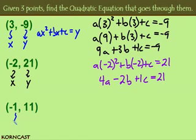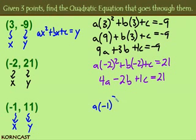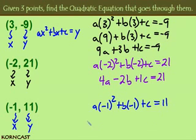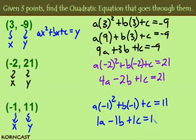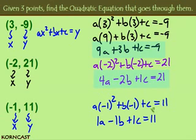Finally, for the third point, x is -1 and y is 11. Substituting into our equation: a times (-1)² plus b times (-1) plus c equals 11. Since (-1)² is 1, this simplifies to 1a - 1b + 1c = 11. Now we have three equations with three unknowns — each has an a, a b, and a c — so we have a system of equations that we can solve.